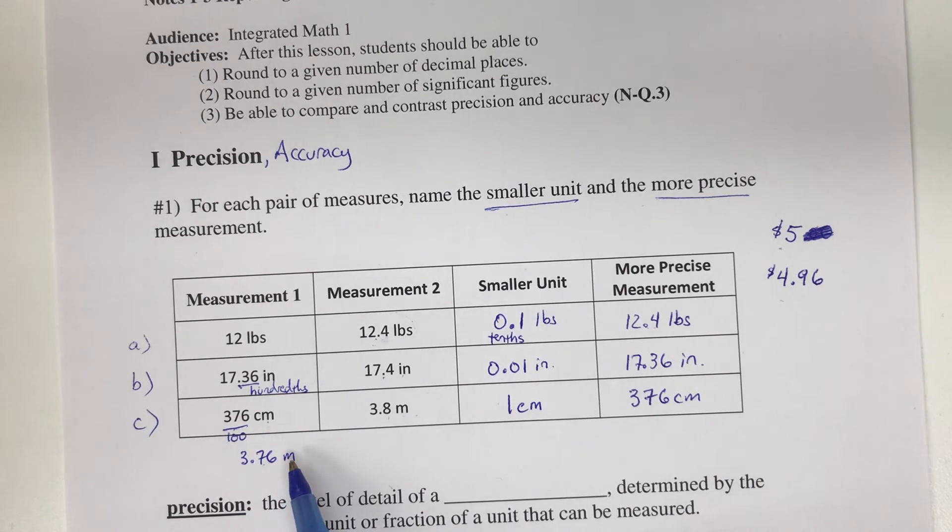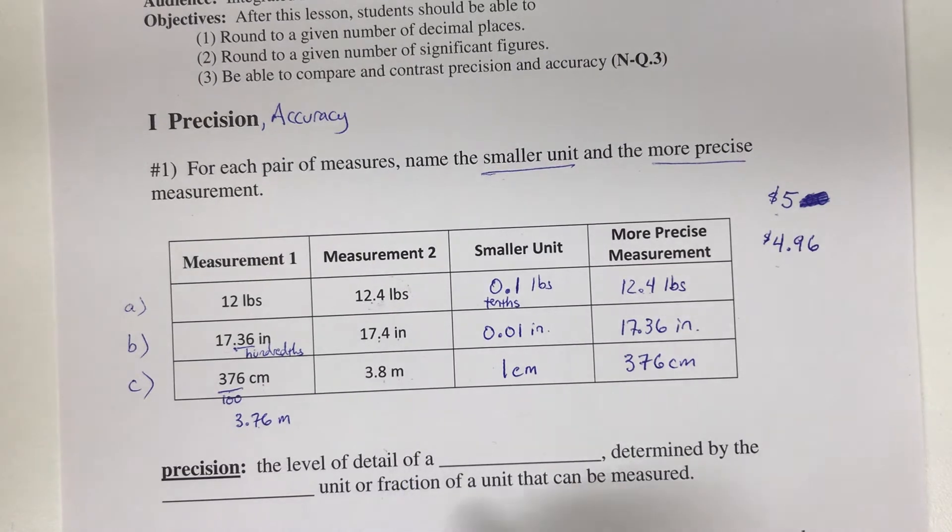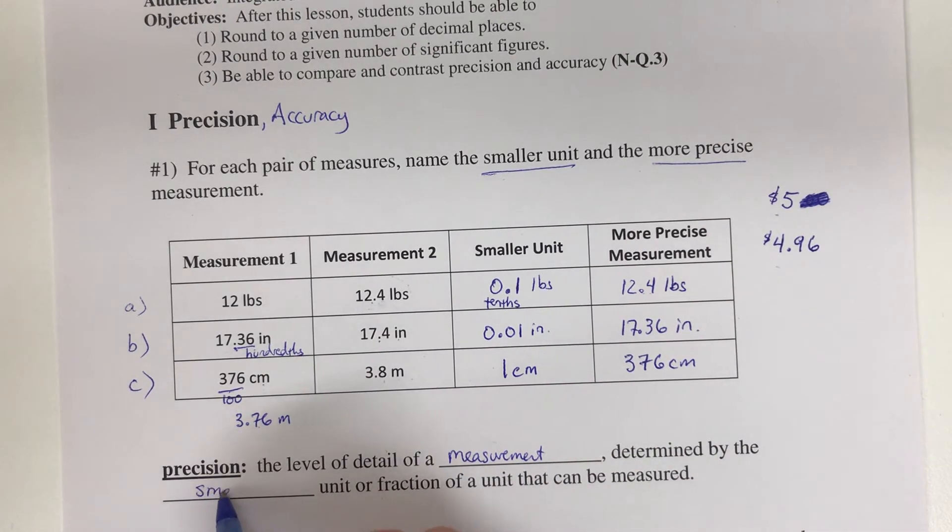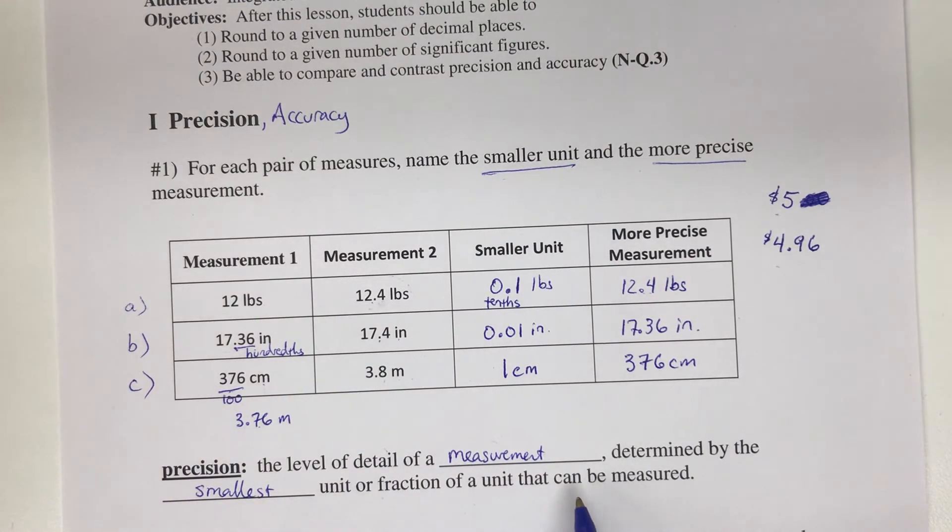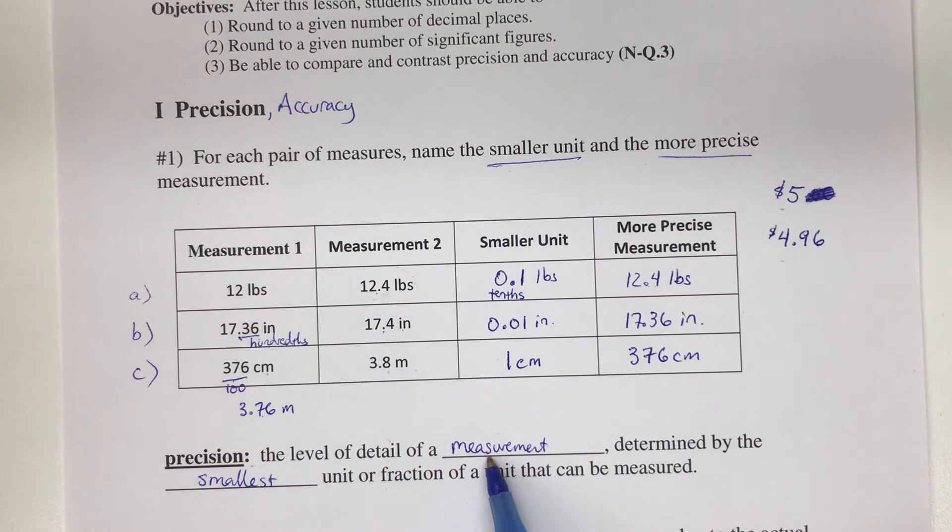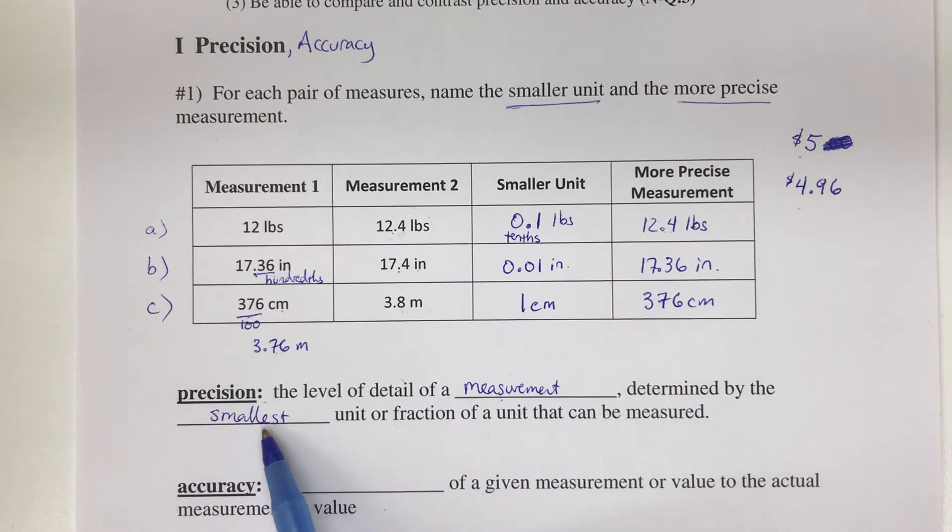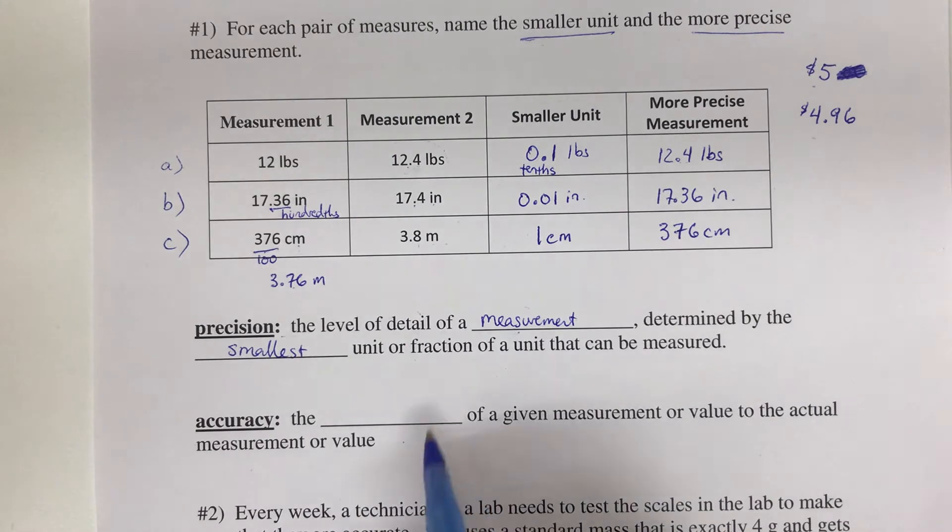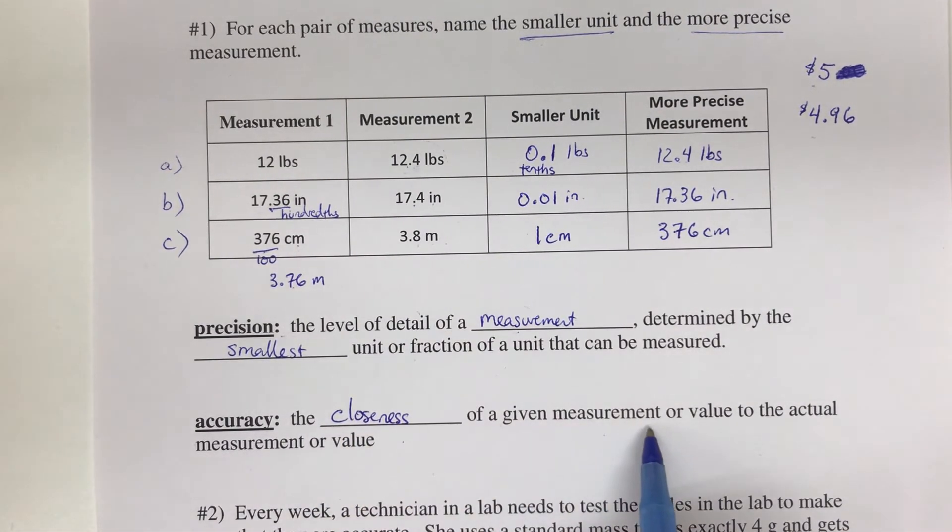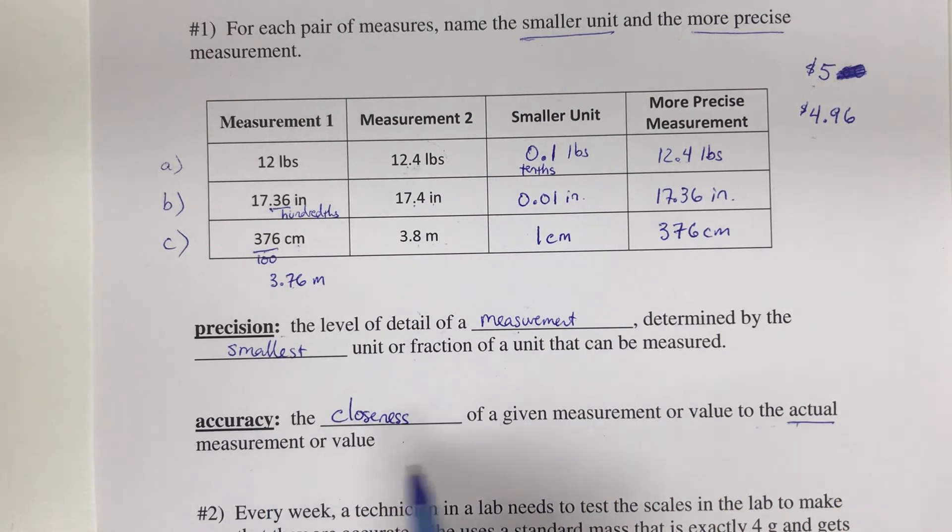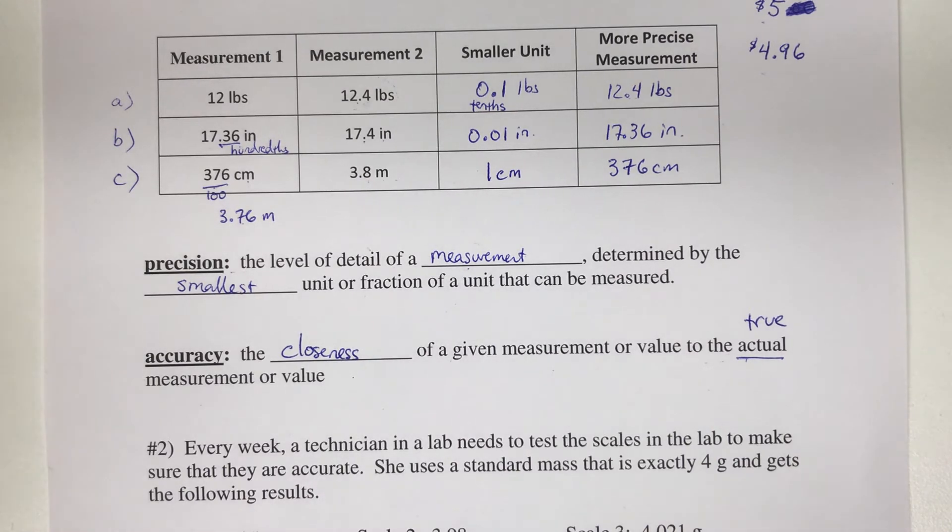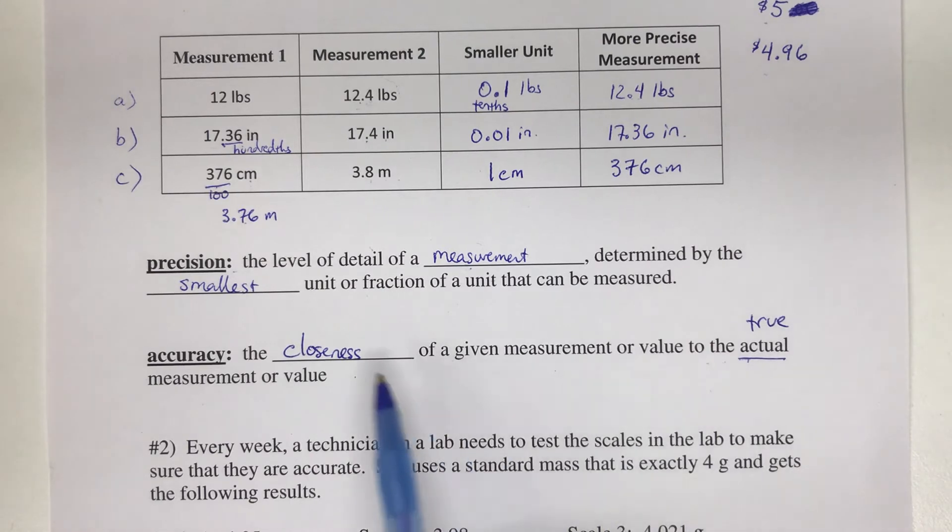By definition, precision is the level of detail of a measurement, determined by the smallest unit or fraction of a unit that can be measured. We take the smaller unit, which ends up being the more precise one. Accuracy is the closeness of a given measurement or value to the actual measurement or value, or the true value. If we take the true value of something and measure it, we may not get the actual number. How accurate we are depends on how close we are to the true or actual measure.